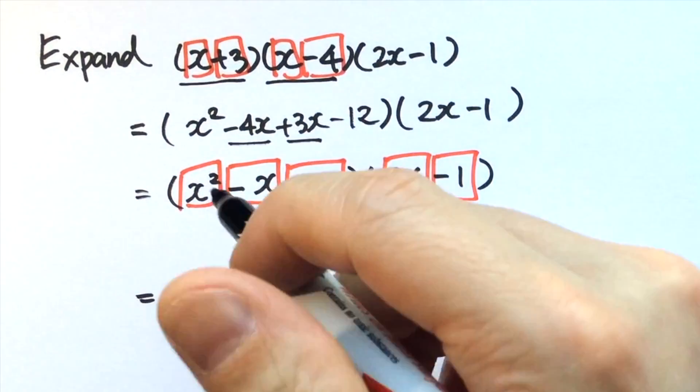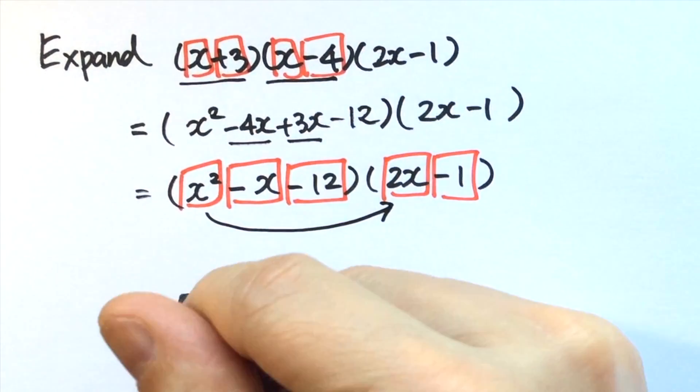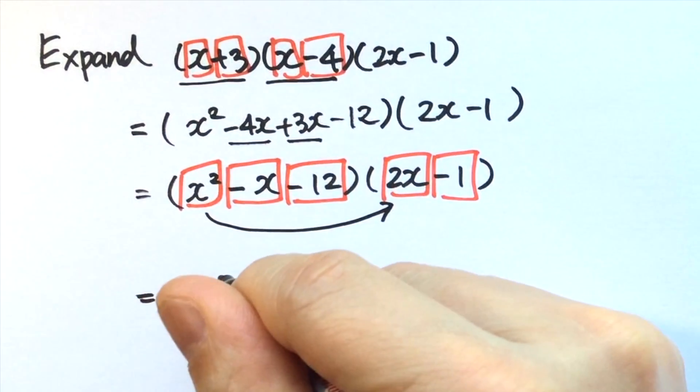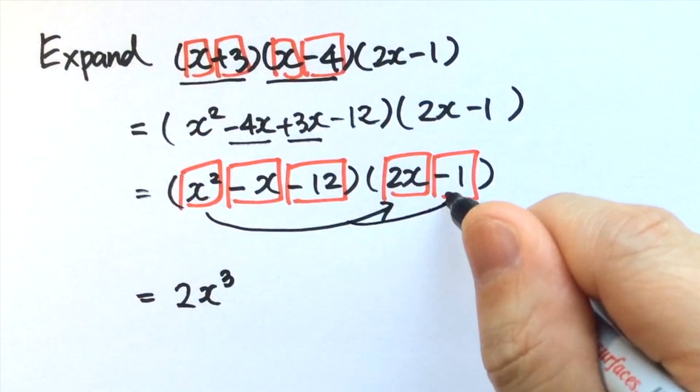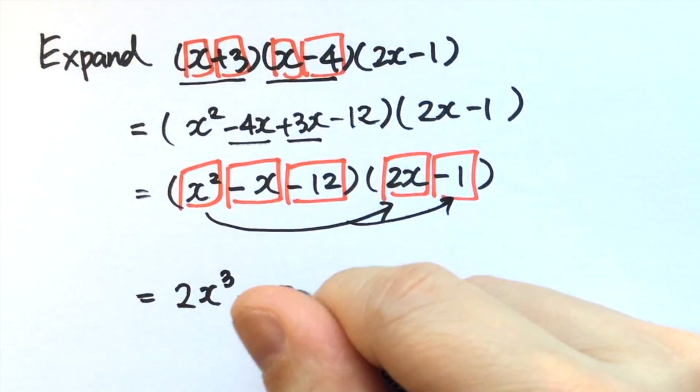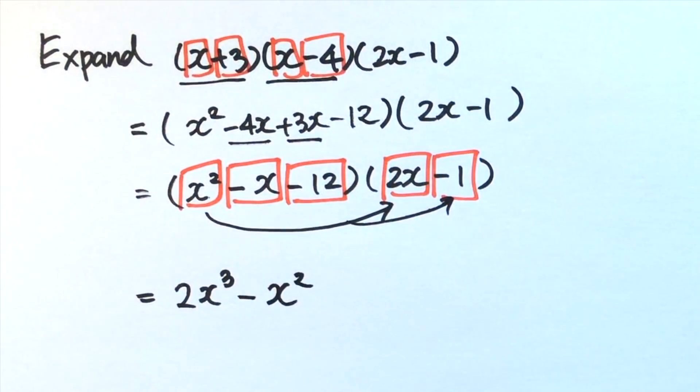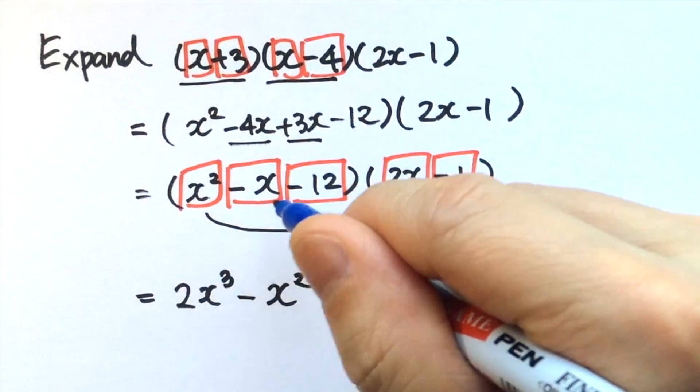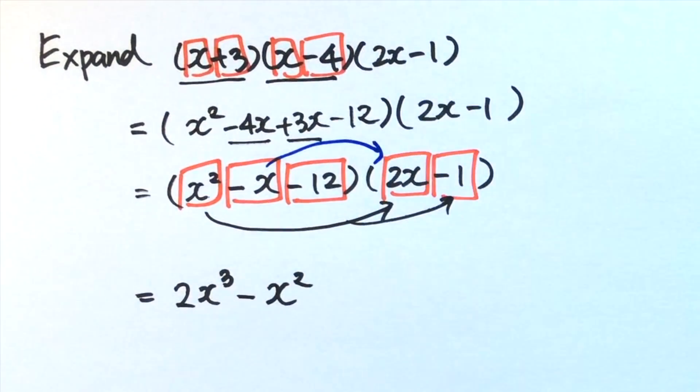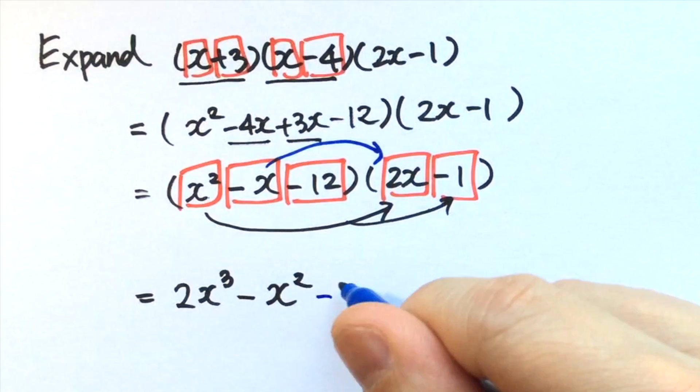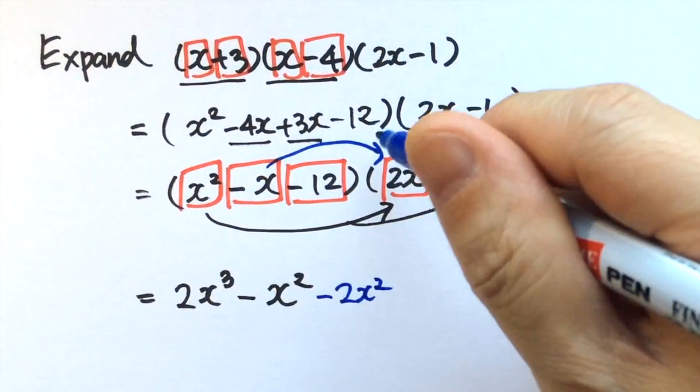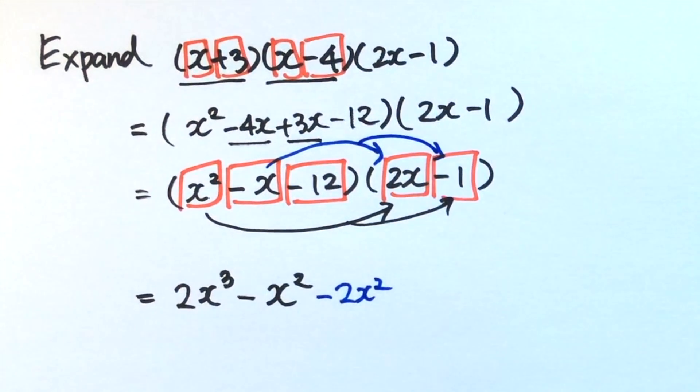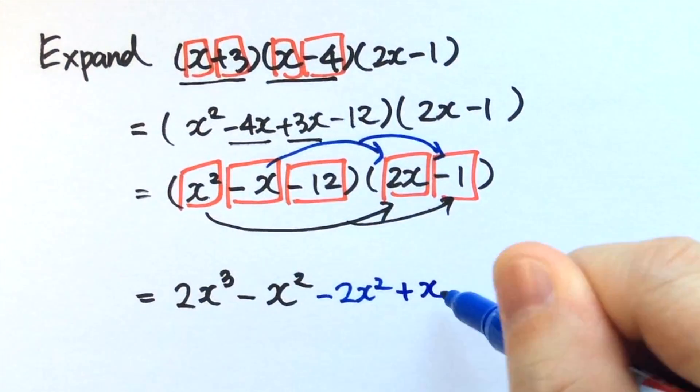x squared times 2x gives 2x cubed. x squared times negative 1 gives negative x squared. And then negative x times 2x gives negative 2x squared. Negative x times negative 1 gives plus x.